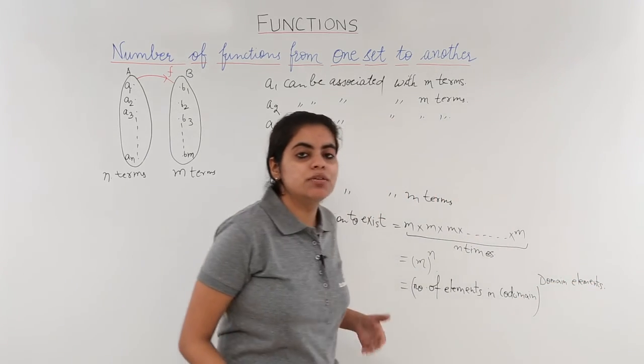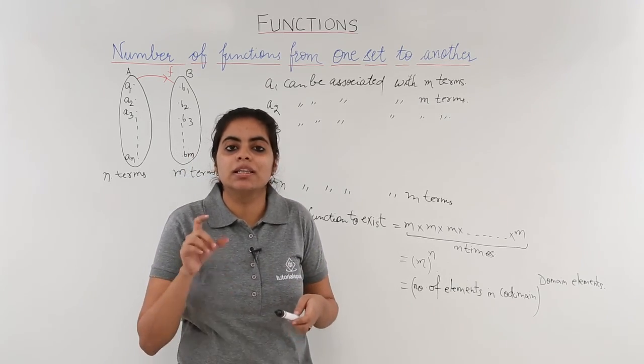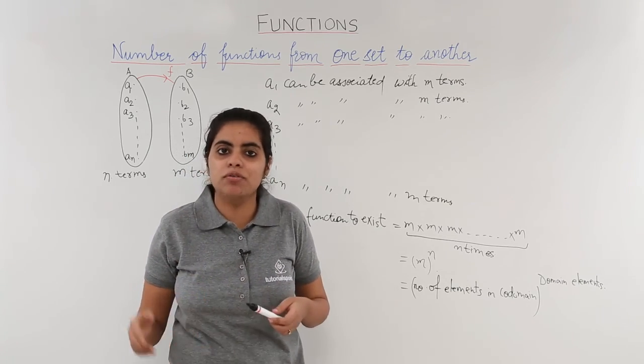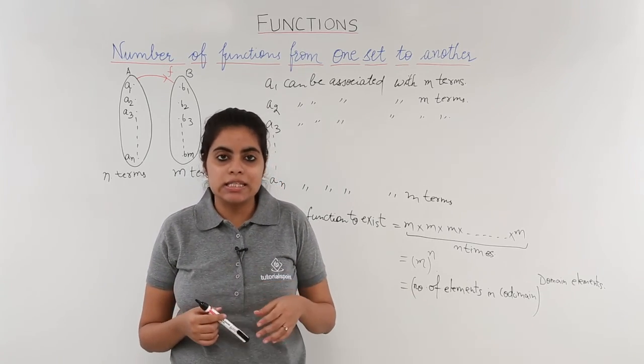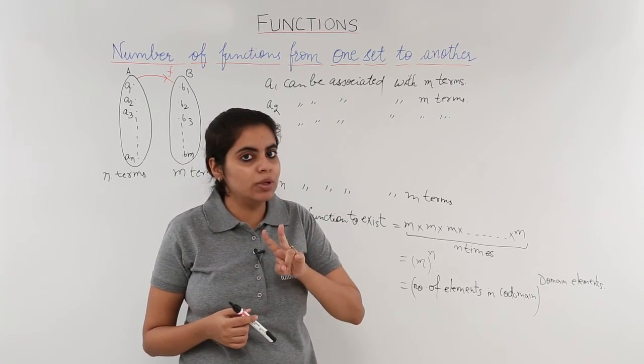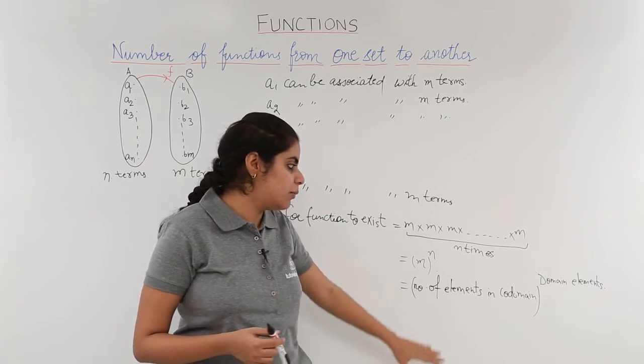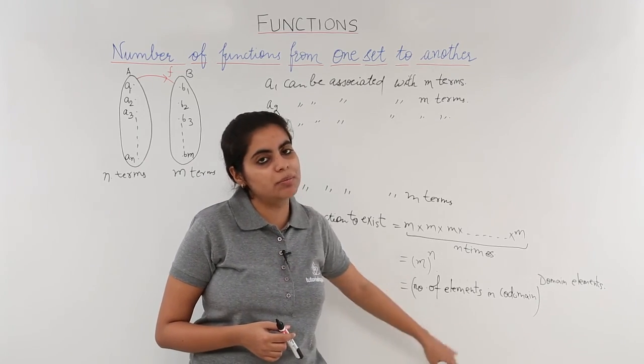So this was the formula for how to find out the number of functions. Relations we did earlier, this is functions for the sets, non-empty sets given to me. The formula is nothing but number of elements in the codomain to the power of number of elements in the domain.